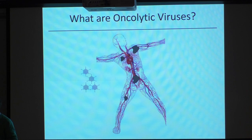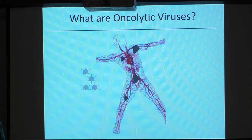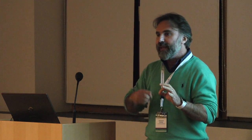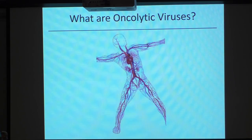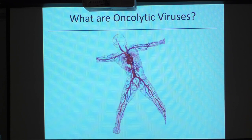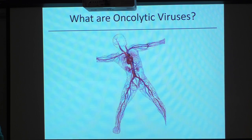Oncolytic viruses are viruses that can find the tumor, replicate in it, and kill it. Once they have selectively killed cancer cells, they can move on to the next cell, continuously doing that until the tumor is cleared. Normal cells can eliminate the virus, but in tumor cells the virus can replicate and kill. That was what people were thinking about ten years ago.